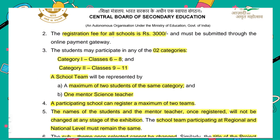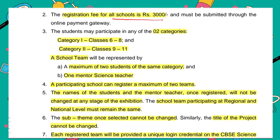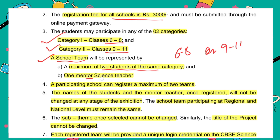The registration fee for all schools is ₹3000. There are two categories in which students can participate: Category 1 is for students of Classes 6 to 8, and Category 2 is for students of Classes 9 to 11. A school can send a maximum of two students for the same category — that is, a team consists of two students who should be of the same category, either Classes 6 to 8 or 9 to 11, along with one science teacher. A school can register a maximum of two teams — one team for Category 1 and another for Category 2.